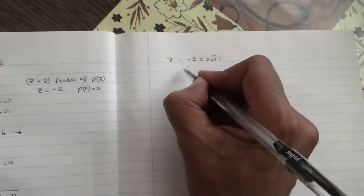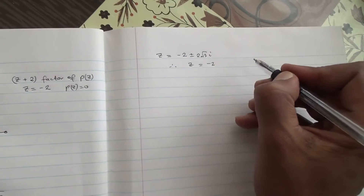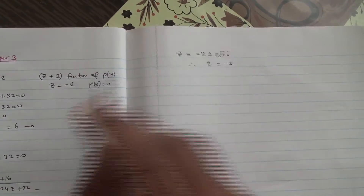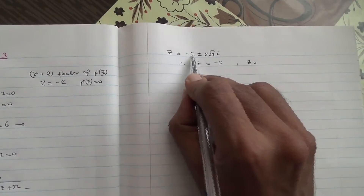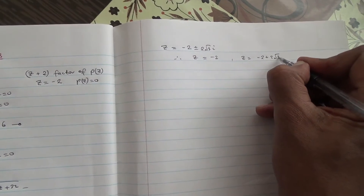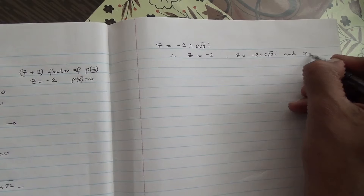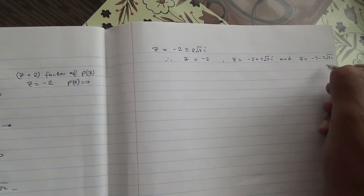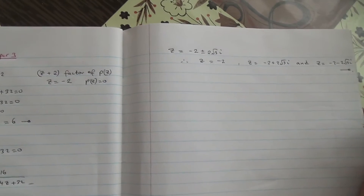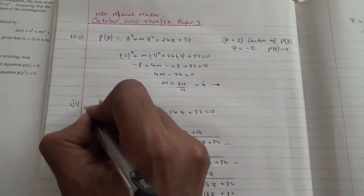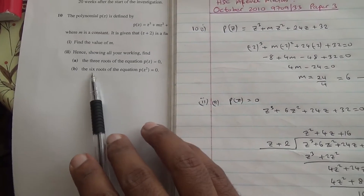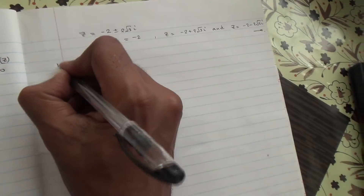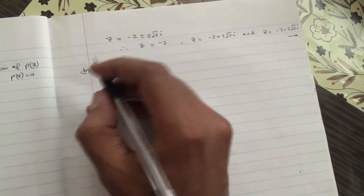So the three roots are: z = −2, z = −2 + 2√3 i, and z = −2 − 2√3 i. That's part A of the second part. Now for part B, we need to find the 6 roots of the equation P(z²) = 0. This is more involved, but let's work through it.